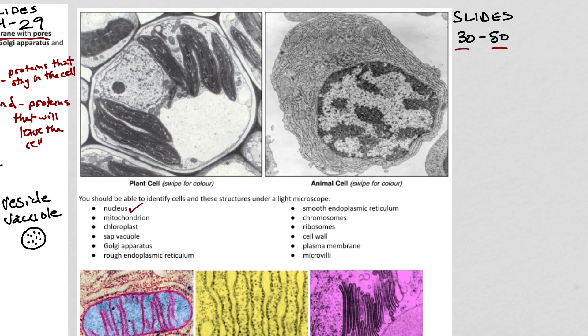The nucleus is pretty easy to spot. Here it is in our plant cell — normally it has a dark spot in the middle called the nucleolus, which is where a lot of ribosomes are made. Here's our big nucleus in our animal cell right here.